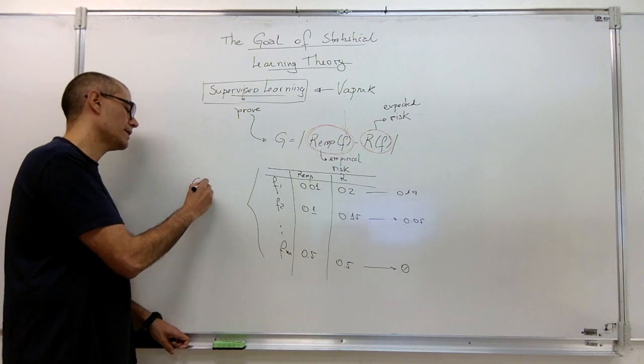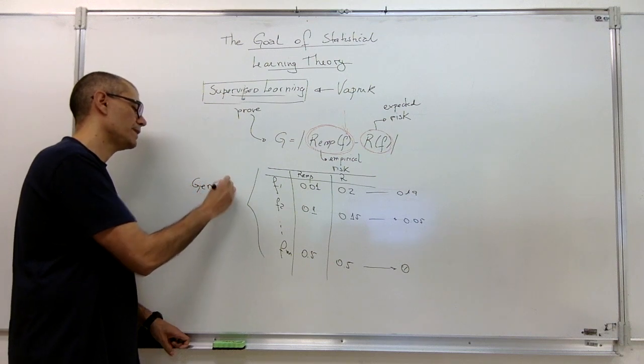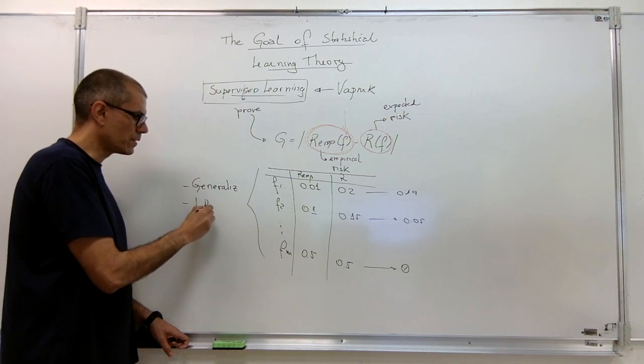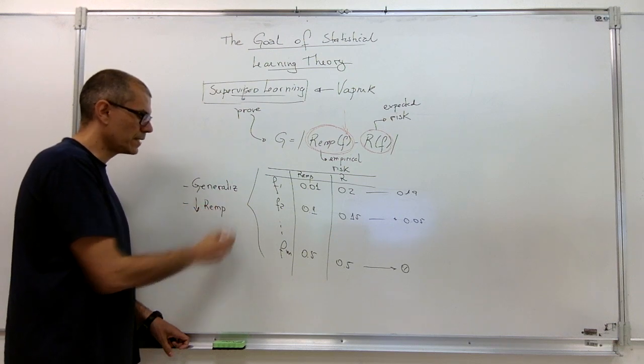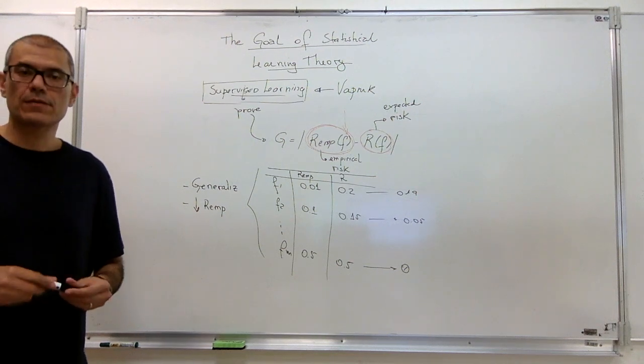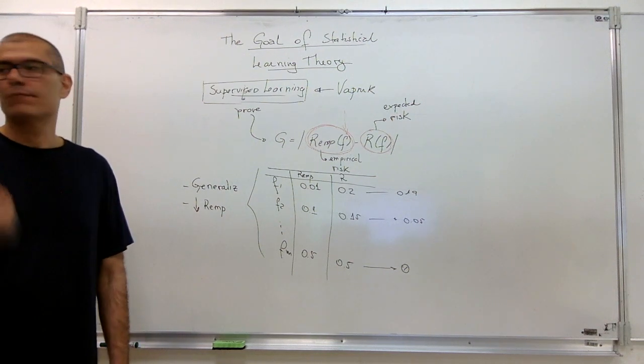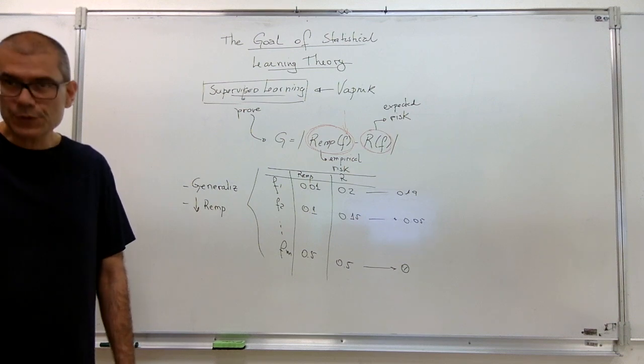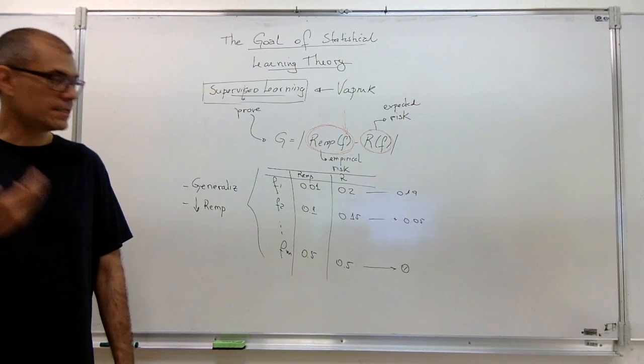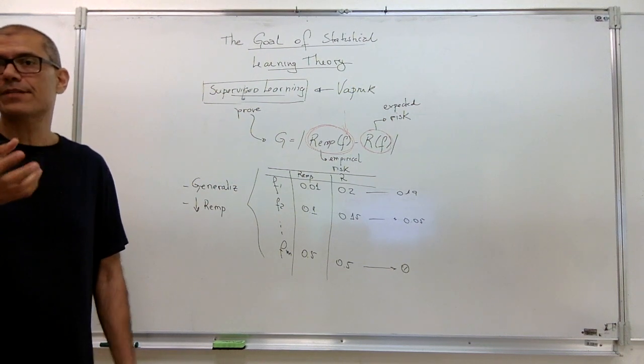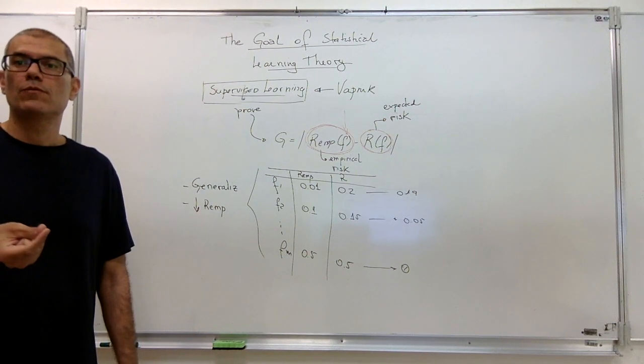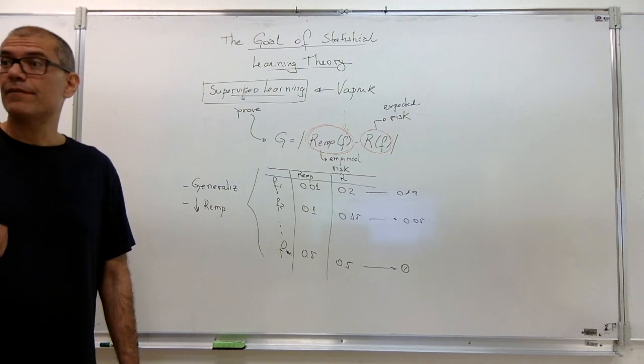So besides the generalization, there is something else we must be interested, which is the reduction of the empirical risk. So Vapnik was interested in two conditions, two basic conditions. Ensure the reduction in the empirical risk and ensure generalization at the same time. So if we reduce the empirical risk and at the same time we have this generalization term approaching zero, we learn and have a useful model.